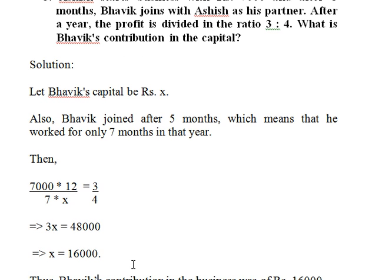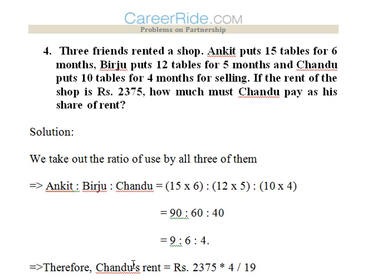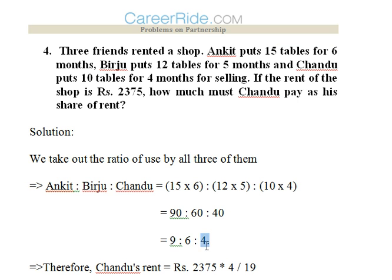Fourth question: Three friends rented a shop. Ankit puts 15 tables for six months, Birju puts 12 tables for five months, and Chandu puts 10 tables for four months for selling. The rent for the shop is 2375. How much does Chandu pay as his share of rent? We take out the usage ratio: Ankit 15 × 6 = 90, Birju 12 × 5 = 60, Chandu 10 × 4 = 40. The ratio is 90:60:40, which simplifies to 9:6:4.